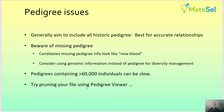We'll finish off by looking at some pedigree issues. Generally, you should aim to include all historic pedigree because it's best for accurate relationships. But be aware of missing pedigree information — candidates with missing pedigree information look like new blood, which is not what you want. In such circumstances you should consider using genomic information instead of pedigree for diversity management, and we'll discuss that in another video.